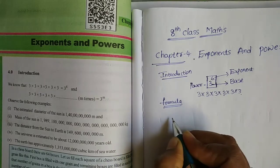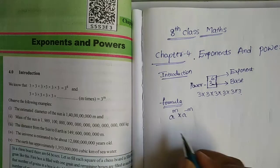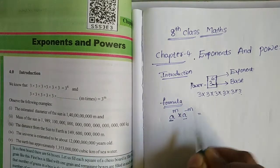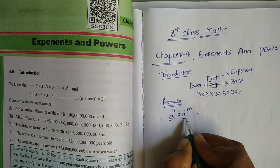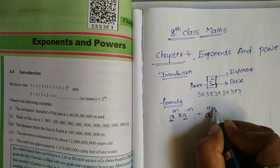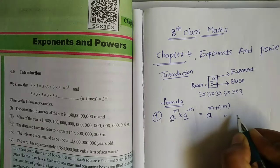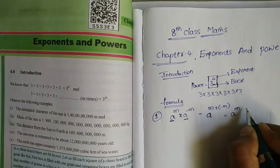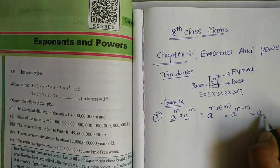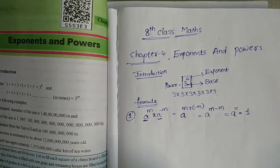1 to the power of m into a to the power of minus m. A to the power of m plus minus m — so this means m equals plus into minus m. A to the power of m minus m equals a to the power of 0, and m minus m equals 0.